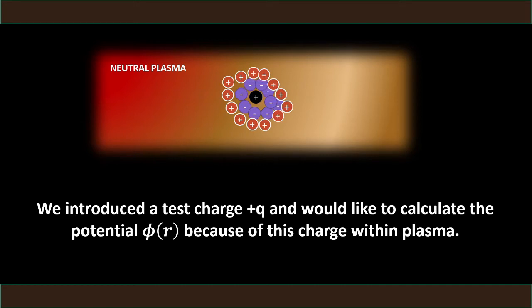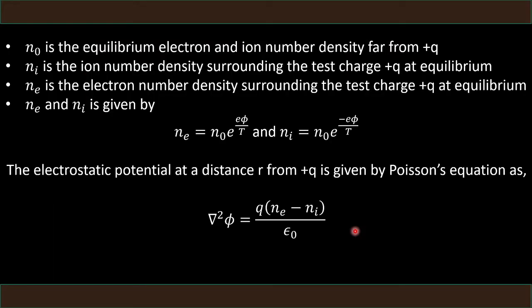So rearranging the structure around itself: we get electron density that's higher near the test charge we have introduced, and the ion density will be lower. Slightly away, the ions will accumulate, giving roughly the kind of distribution shown in the figure. With this rearrangement of particles — ions and electrons — in the plasma in the presence of this test charge, we will be calculating the potential as a function of R, and while doing so we will come across the term Debye length.